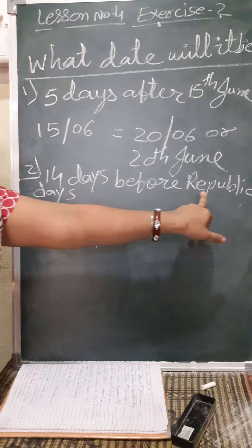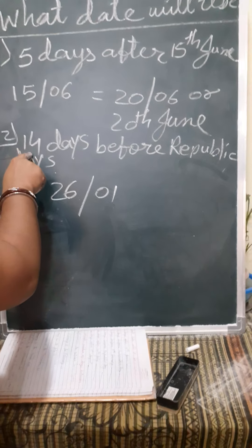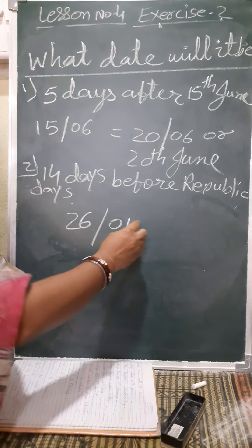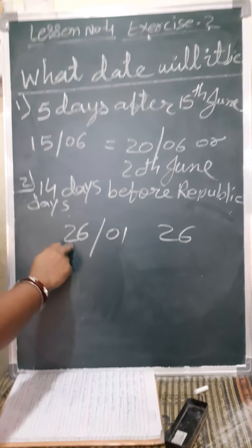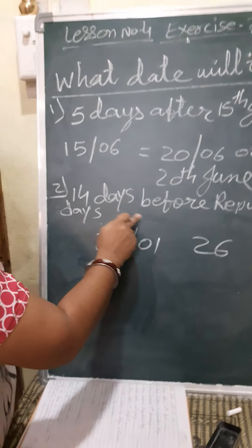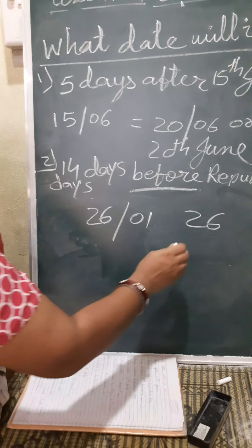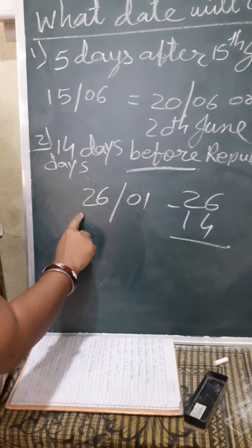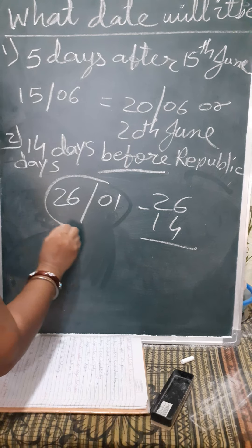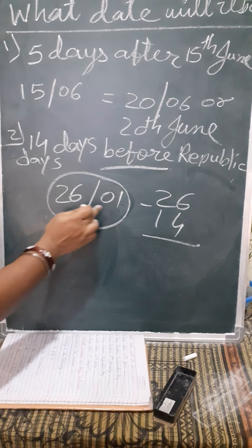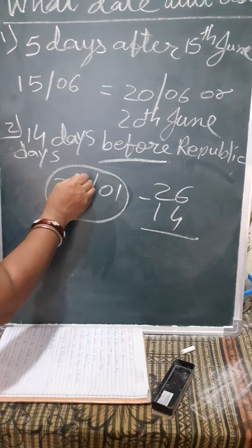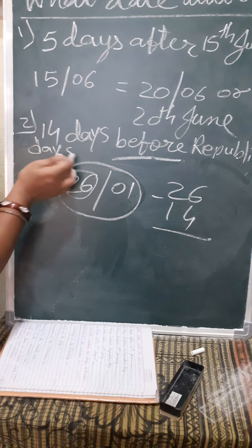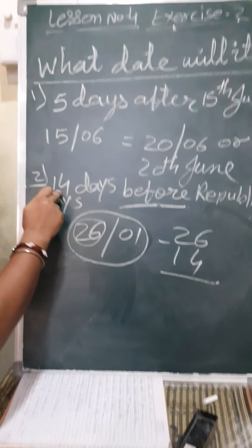Republic Day is 26th January, so how many — 14 days before. Before means what will we do? Subtract from the day. Our day is 26th. Now from that, before means we have to subtract 14 days. So first of all we will write the day: Republic Day is 26th January, and the date is 26th. Now before means definitely we will subtract — we subtract these 14 days.